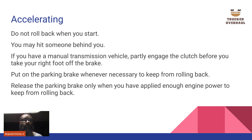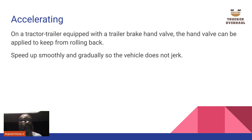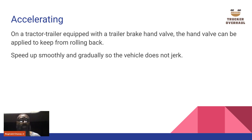The clutch acts as a brake on the truck. On a trailer equipped with a trailer brake handle — that valve you pull, usually located near the emergency brakes and trailer brake knobs, sometimes attached to the steering wheel — the hand valve can be applied to keep from rolling back.